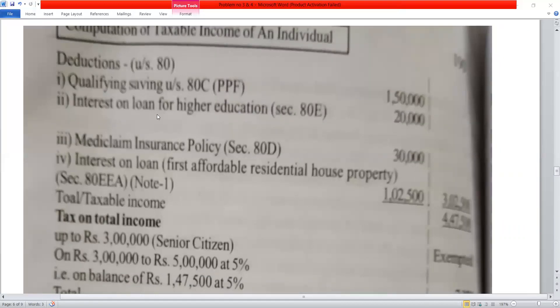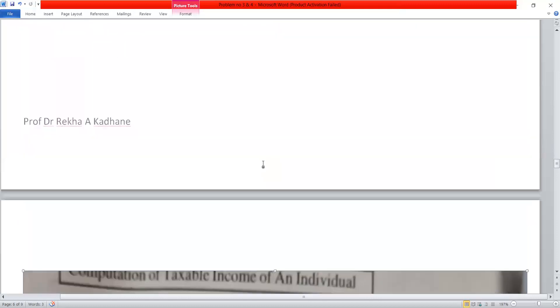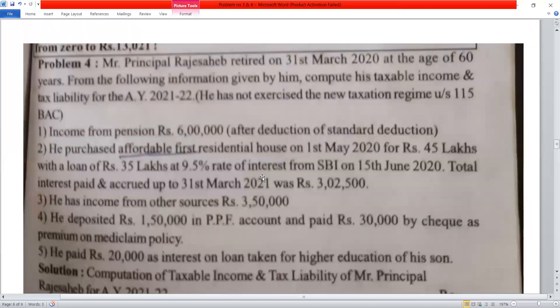Place deductions under Section 80. First qualifying savings under Section 80C: Public Provident Fund Rs. 1,50,000.